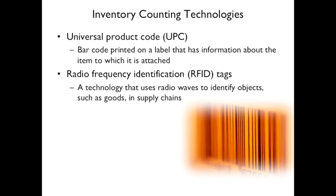The second technology is RFID, which uses radio waves to identify objects. One example: at a hotel, you might hold a card up to the door. If it's a magnetic reader, that's a barcode system. But the more expensive ones, where you just hold the card up without swiping, use RFID.